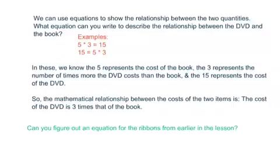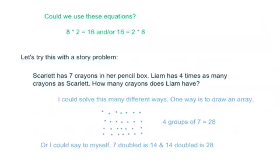Okay. So now that we've had that conversation, could you come up with an equation for the ribbons that we were talking about earlier? See if you can write an equation down. After you have that down, come on back. How about this? Could we say 8 × 2 = 16 or 16 = 2 × 8? So 8 is the length of Eve's ribbon and it's two times shorter, I guess is the way I worded that, two times shorter than Maxine's, which is 16.